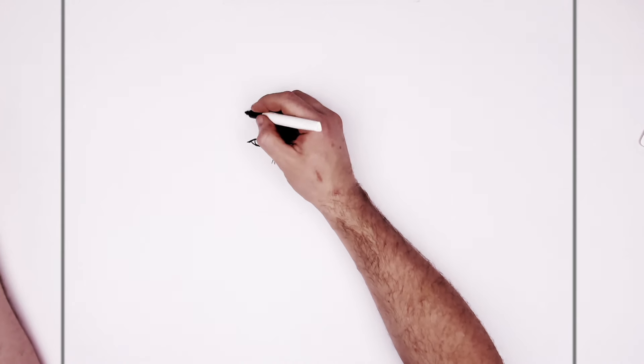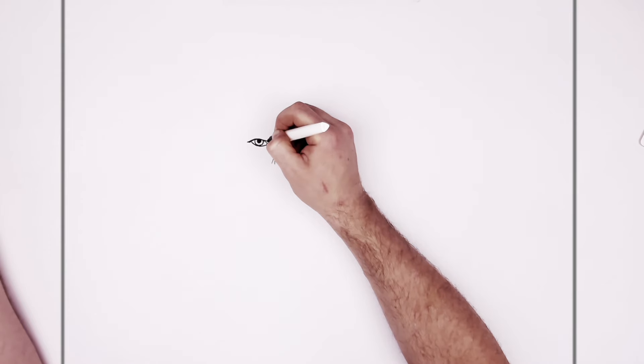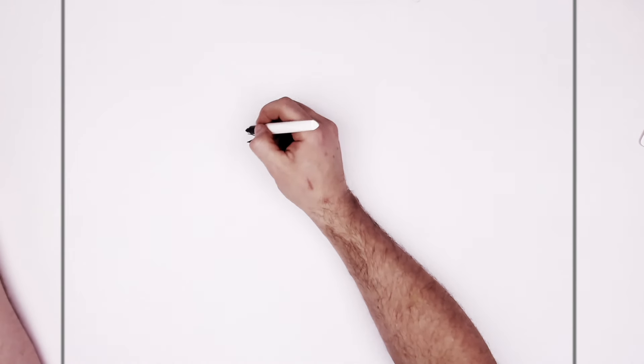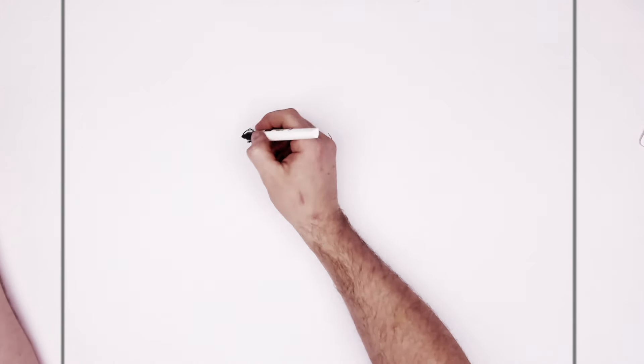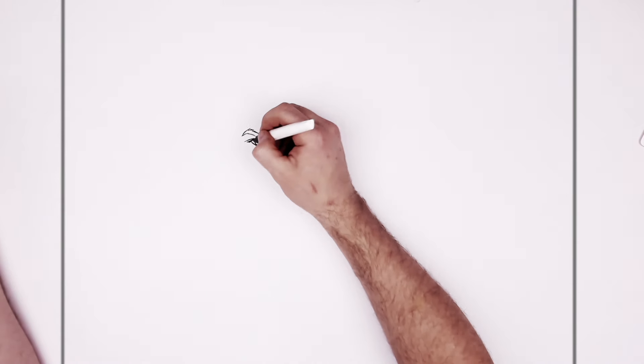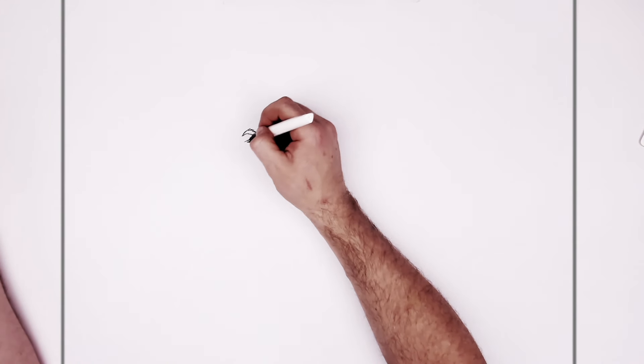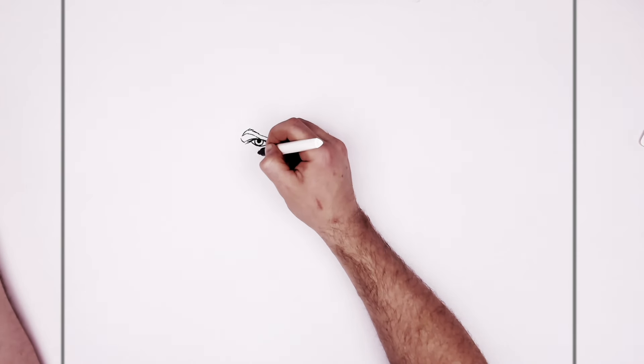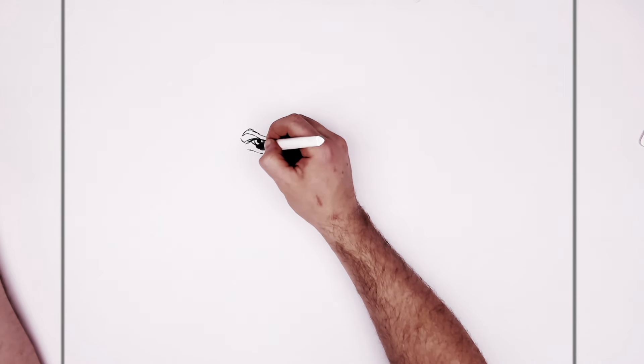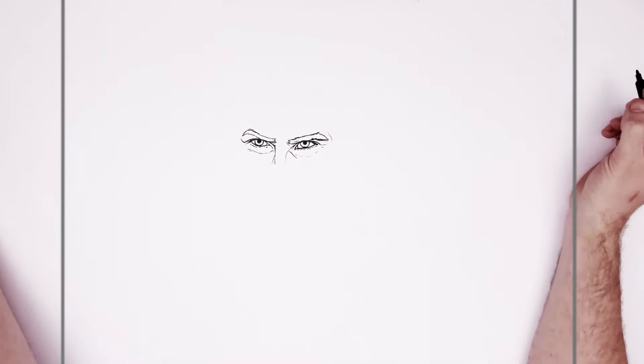So this becomes his eyebrow. He's got a hairy eyebrow again, and it just goes back this way. And then another eyelid line here. And again he's got some bags underneath his eyes. Eyelashes on the bottom of his eyelid.